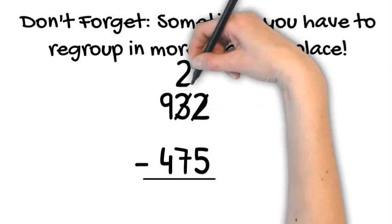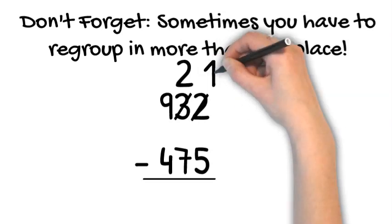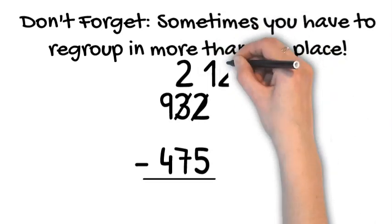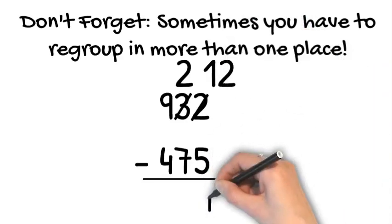And then we bring that ten stick next door. We already have 2 there. 2 ones, so 10 plus 2 is 12. Let's change the ones place to a 12 on top. 12 take away 5 is 7.